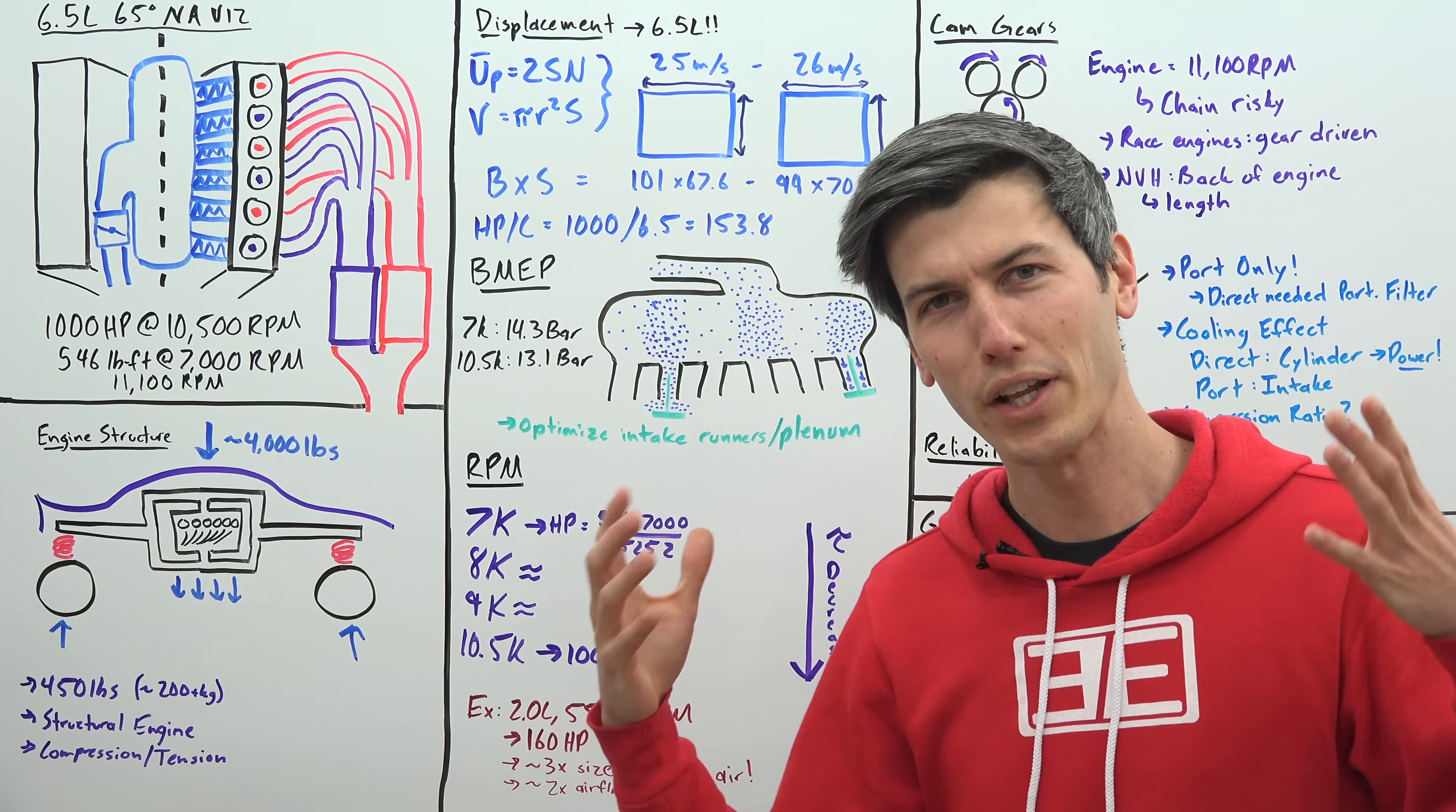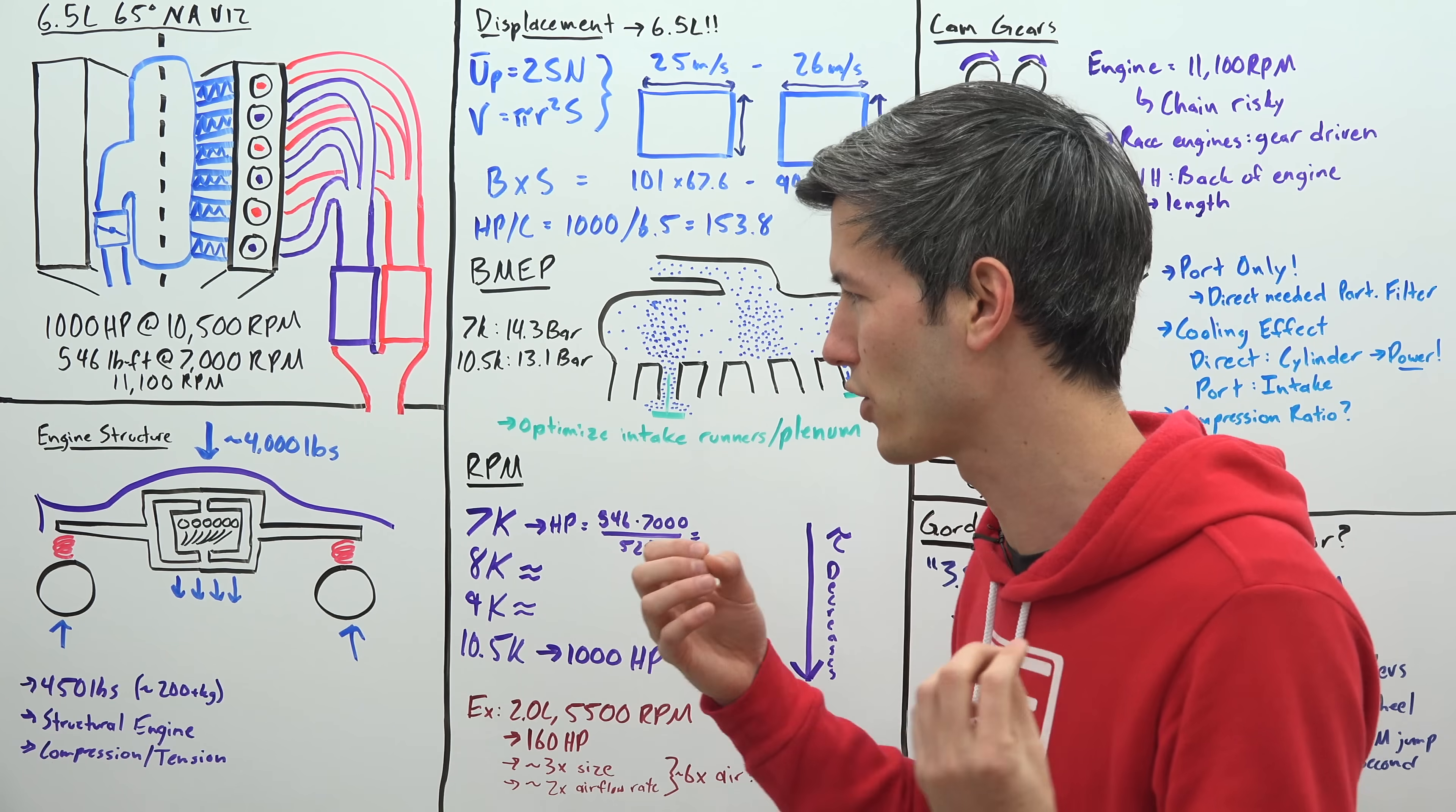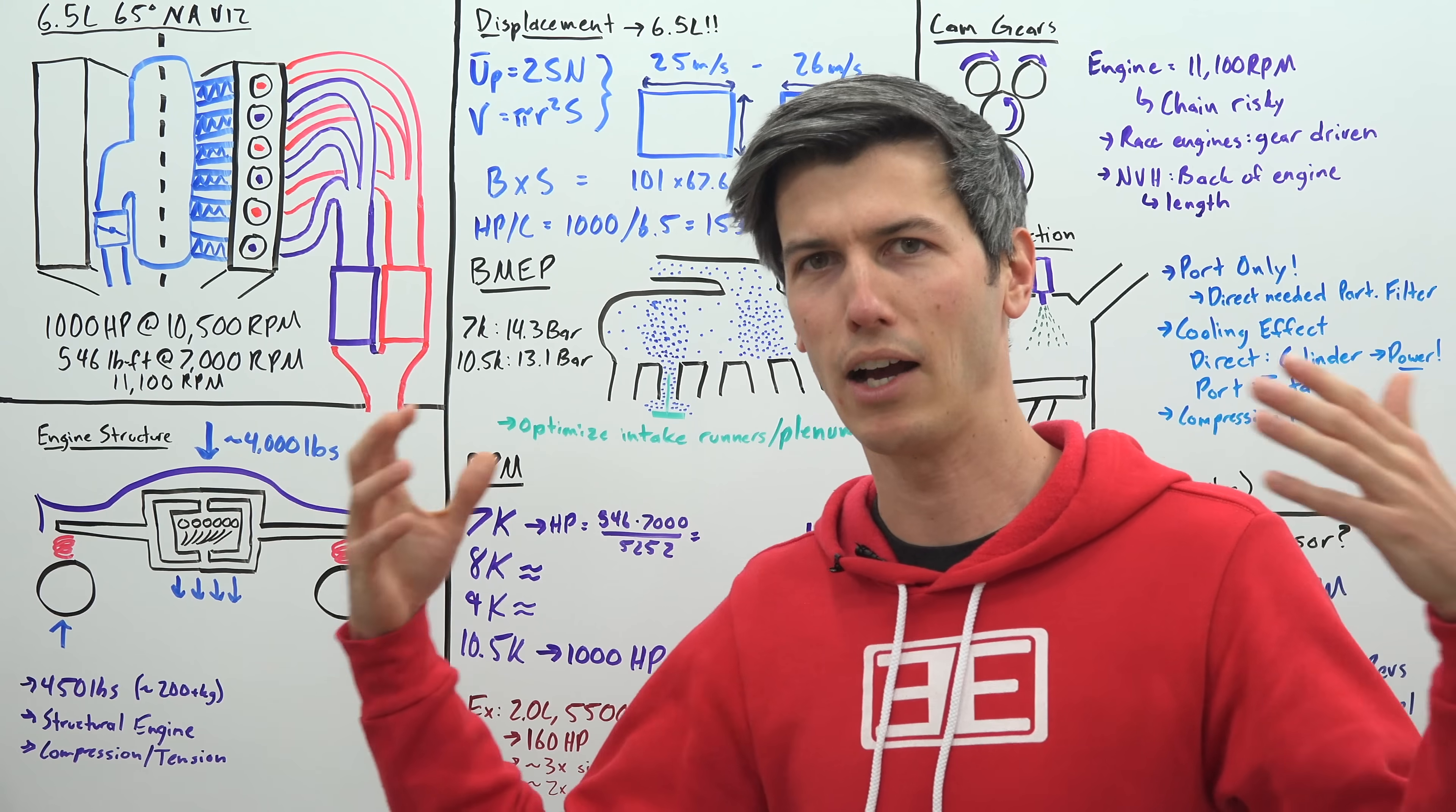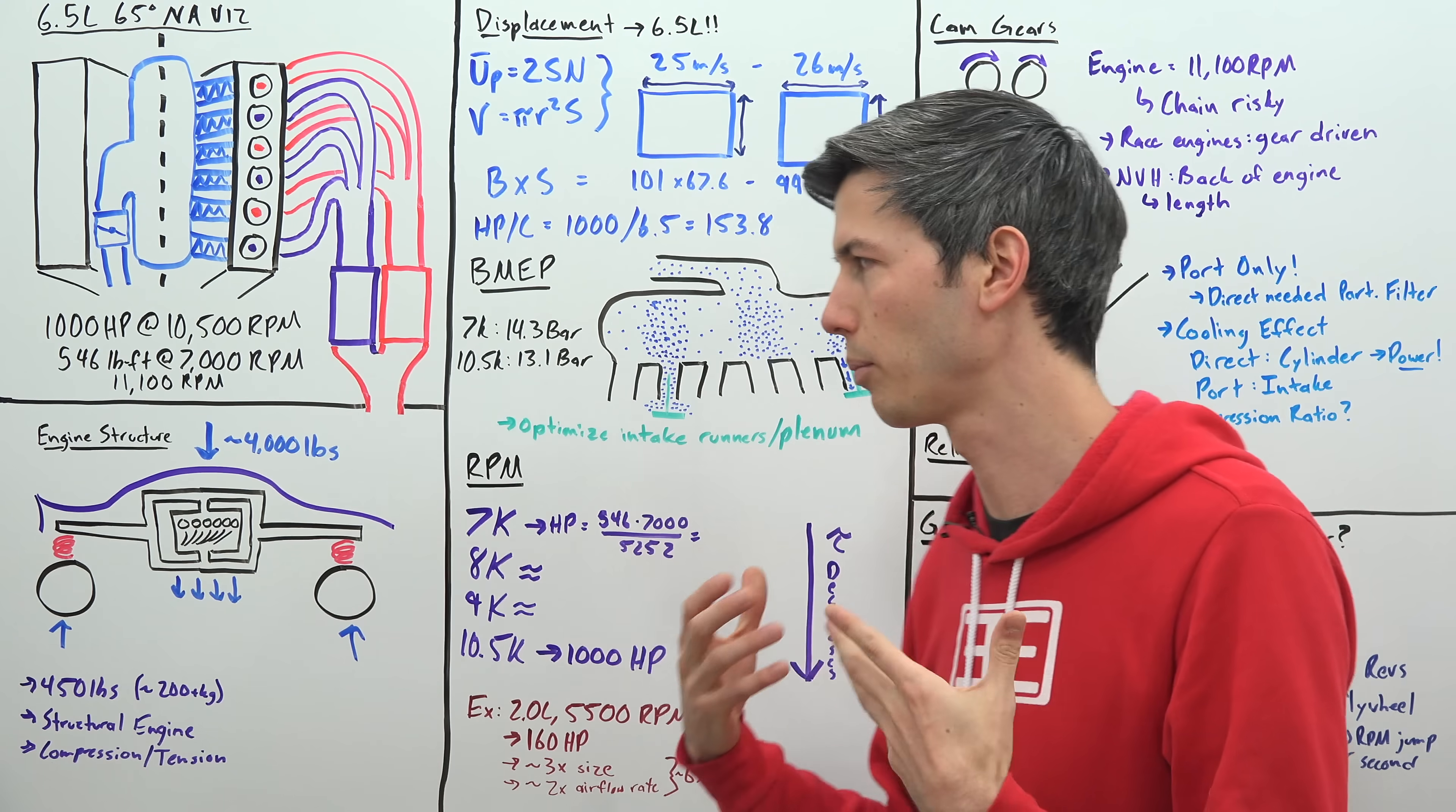Now one of the unique challenges with this engine, of course the Aston Martin Valkyrie is designed to be as light as possible and so as a result the engine is used as a structural member of the vehicle. So it's actually what holds together the front and the rear of the car. In doing so you kind of simplify things, you allow the engine to serve multiple purposes, not only is it powering the vehicle but it's also structural so you can help reduce weight.